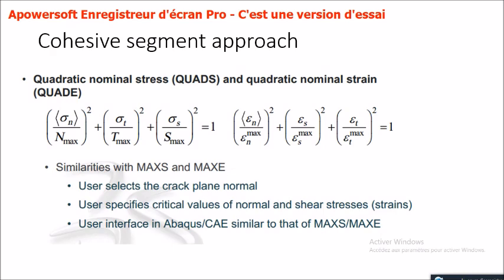For the quadratic nominal stress (QUADS) and quadratic nominal strain (QUADE) criteria, these have similarities with MAXES and MAXPE. The user selects the crack plane normal and specifies critical values of normal and shear stresses and strains. The user interface in Abacus CAE is similar to that of MAXES and MAXE.